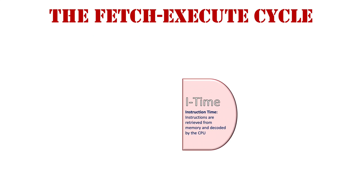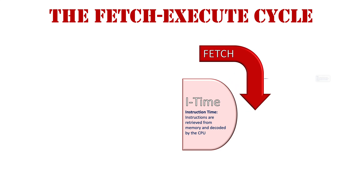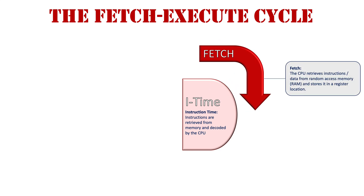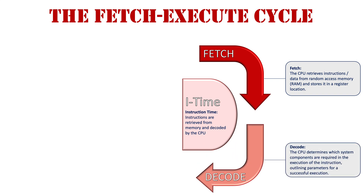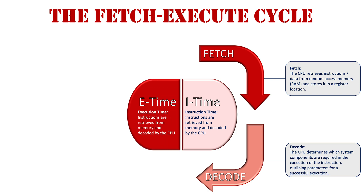Let's look at this diagrammatically now. We've got our two sides. We've got the I-time side, which is the instruction side — instructions are retrieved from memory and decoded by the CPU. What we do first is fetch those instructions: the CPU retrieves the data from random access memory and stores it in a register location in preparation for processing. Next it decodes those instructions, determining which components are required for execution and outlining the parameters for a successful process. Then we move into the E-time phase where the instructions are now processed by the CPU.